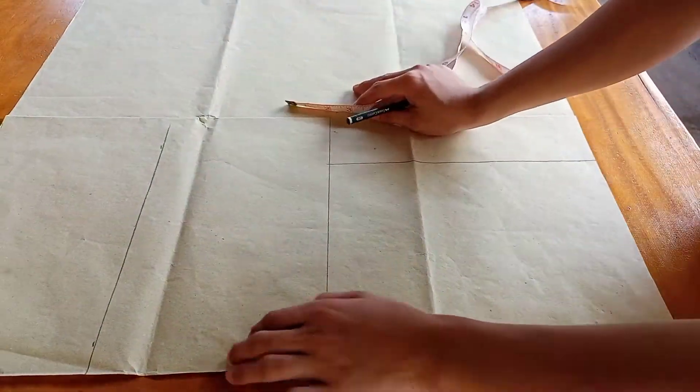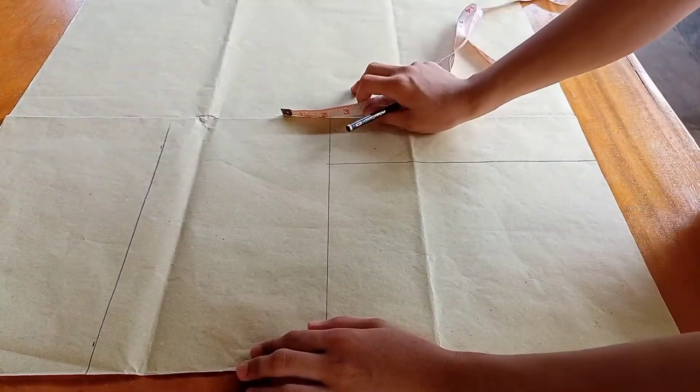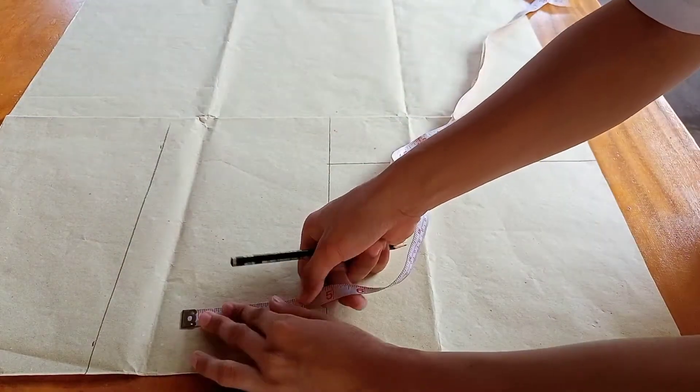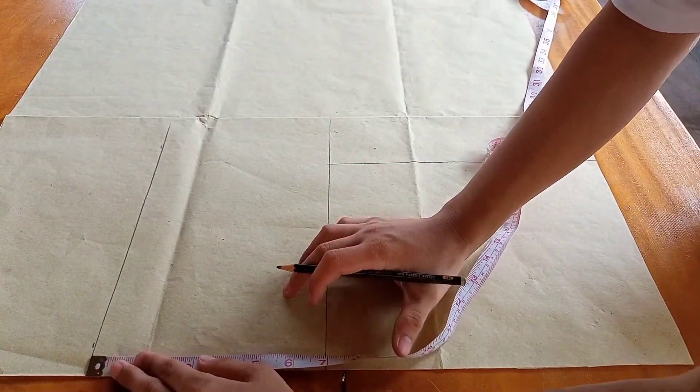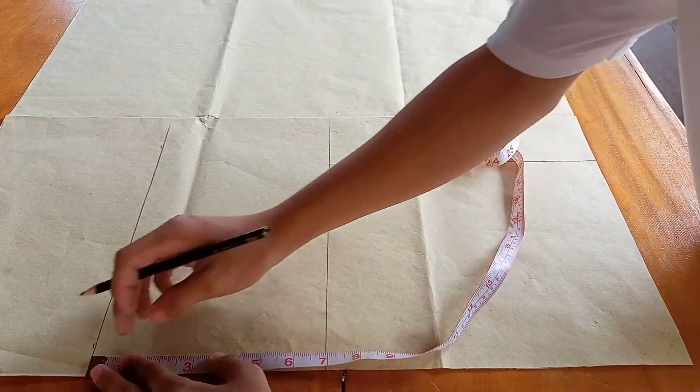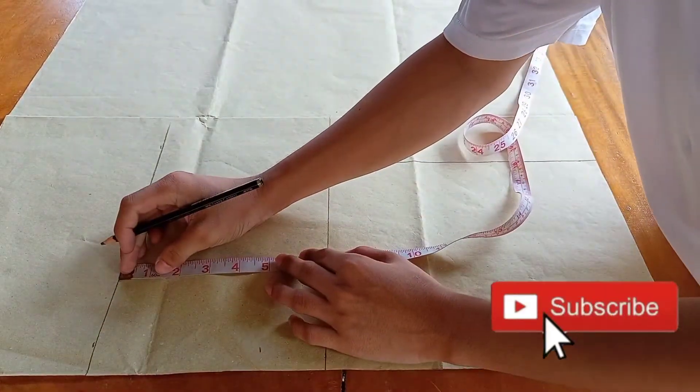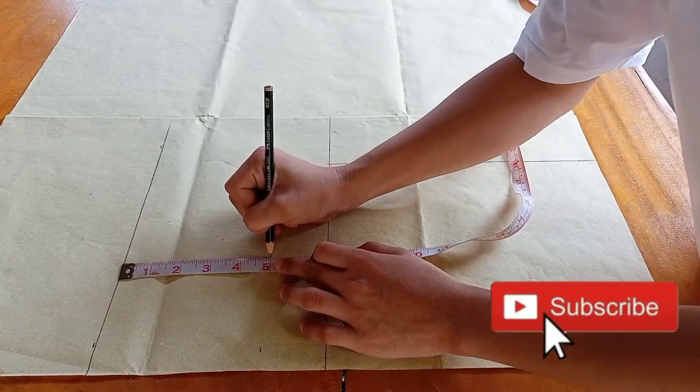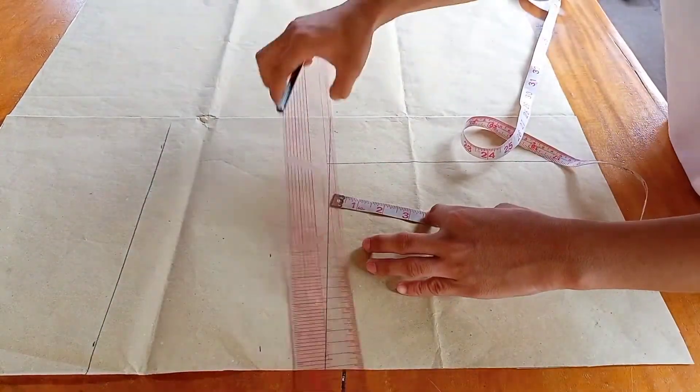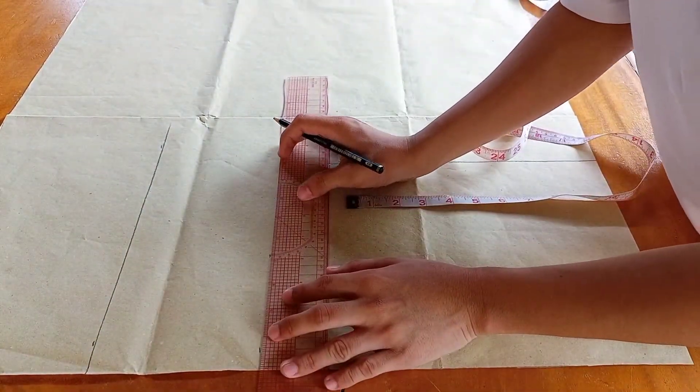Now let's move on to this part for dart intake. First, measure 5 inches downward from the waistline. And square forward, just a little bit.